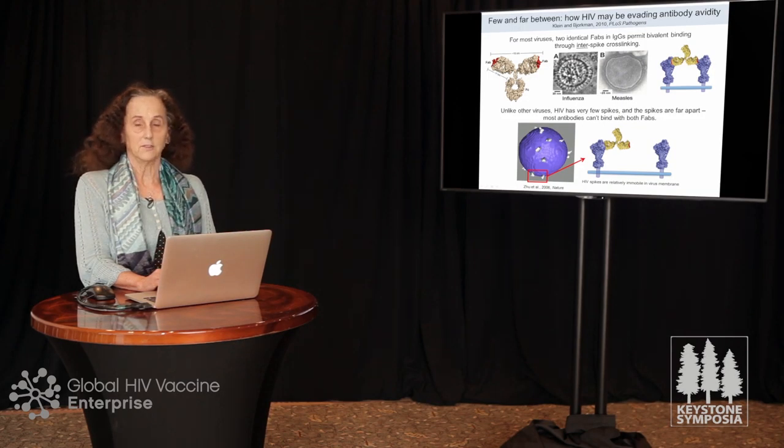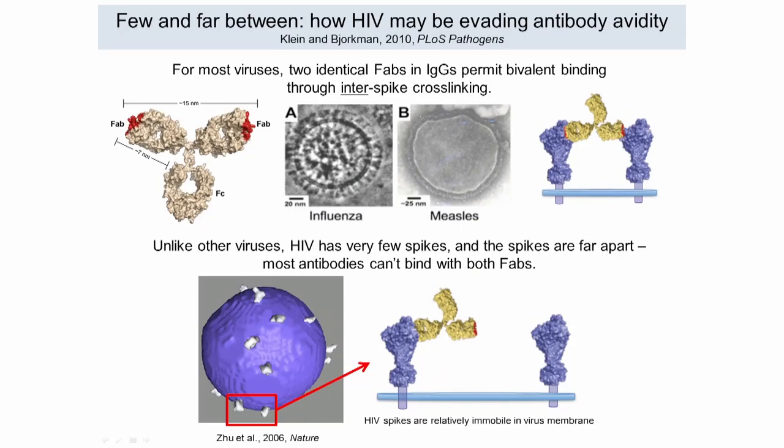That's almost certainly why antibodies evolved to have two or more arms — so they can bind with avidity. If a viral spike mutates and the affinity between the Fab and spike goes down, you may still get the antibody to bind because it can bind bivalently. That's what people mean when they say avidity effects can overcome low affinity.